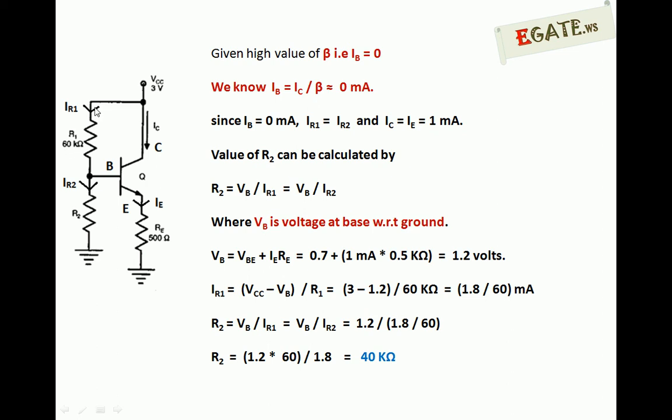Next, we can calculate IR1, which is also flowing through R2. IR1 is the voltage difference across this resistor divided by the resistance value. IR1 equals VCC minus VB divided by R1. VCC is 3 volts, VB is 1.2 volts, divided by R1 which is 60 kilo ohms, so that's 1.8 divided by 60 milliamperes.